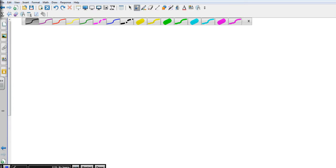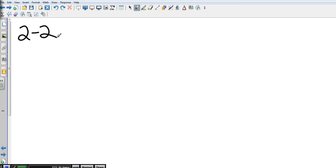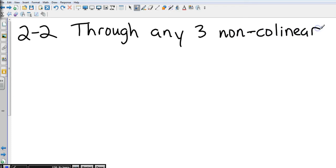Let's look at the second one. 2-2, again, two point two. I write them as dashes, you can write it however you want. 2-2: through any three non-collinear points there is exactly one plane.